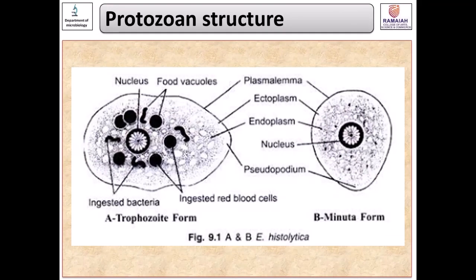Entamoeba histolytica protozoans have a life cycle during which the mature protozoan develops through different cystic stages, existing as cysts in an inactive form, before developing to the mature protozoan form capable of causing disease. In the case of Entamoeba histolytica, it exists in two distinct forms: the magna or trophozoite form, and the minuta or precystic form.